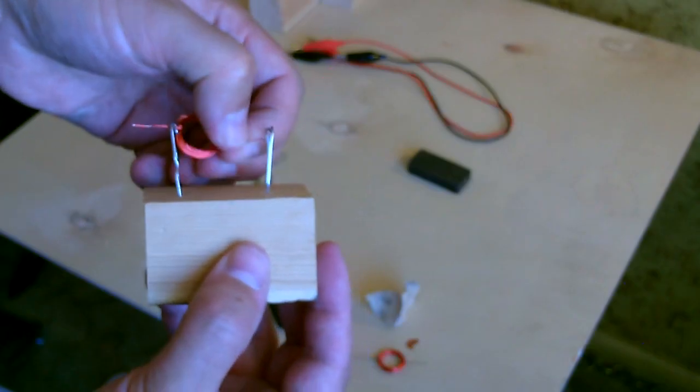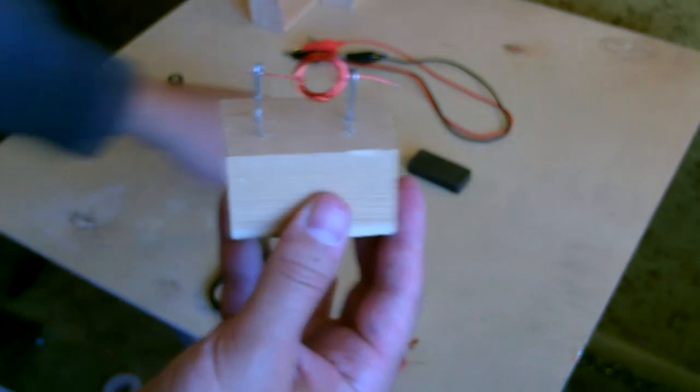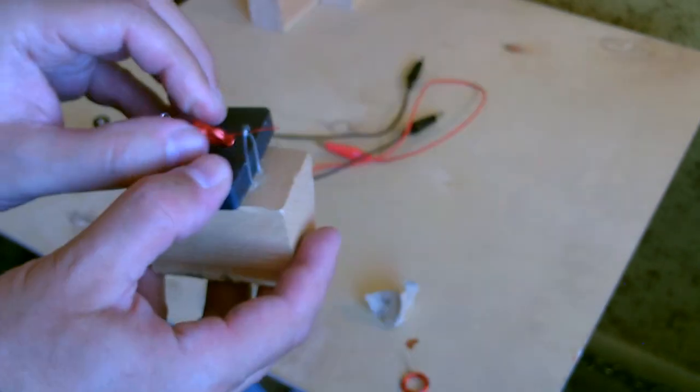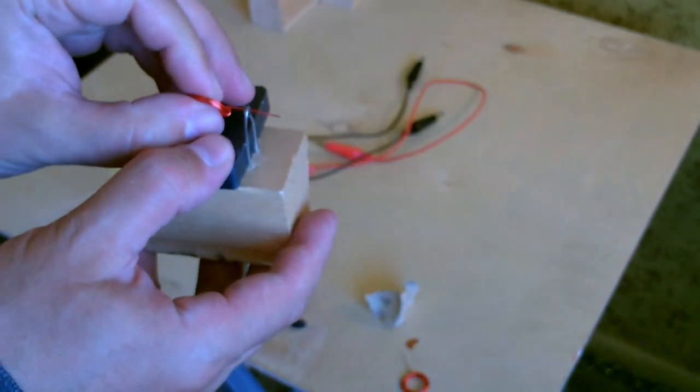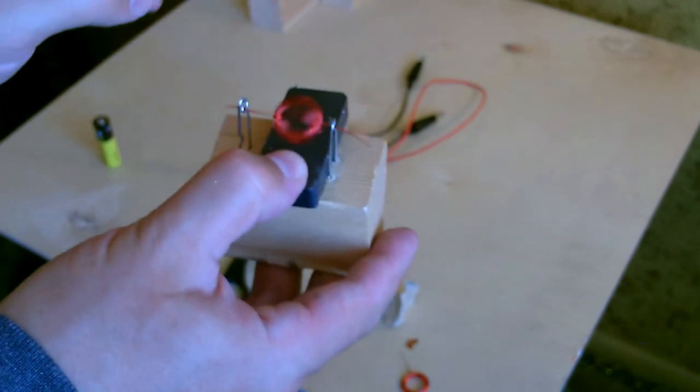Then just slip this in like that, then you slip a magnet underneath. Works best if this thing is nice and straight and there's just a little bit of clearance between the magnet and the wire.